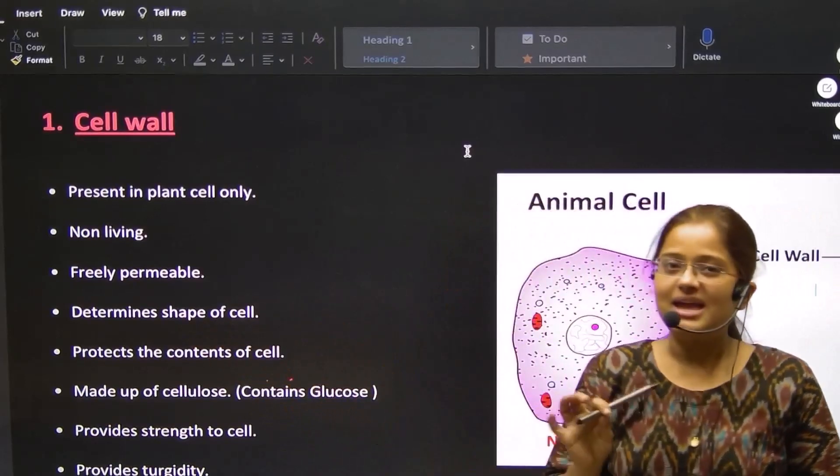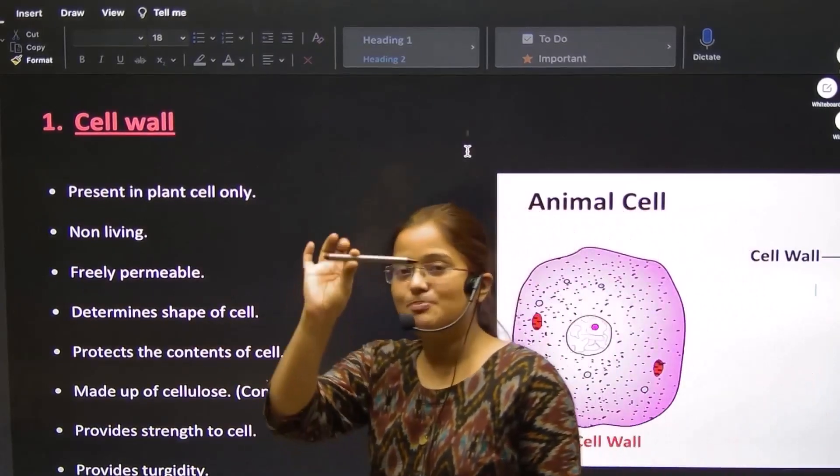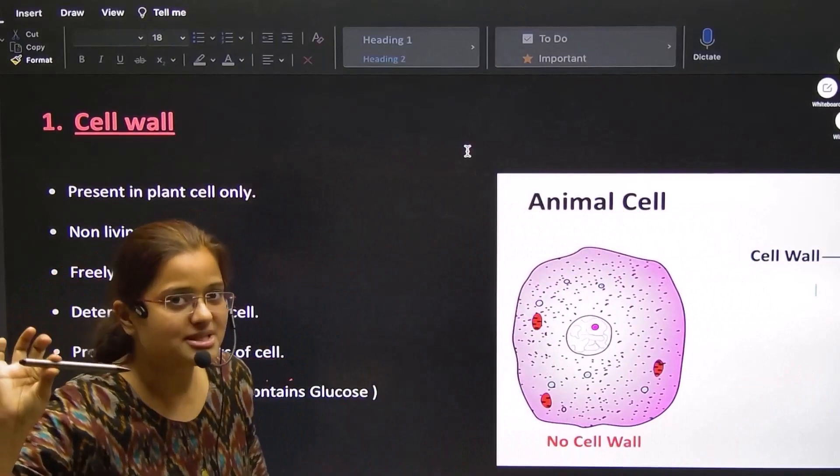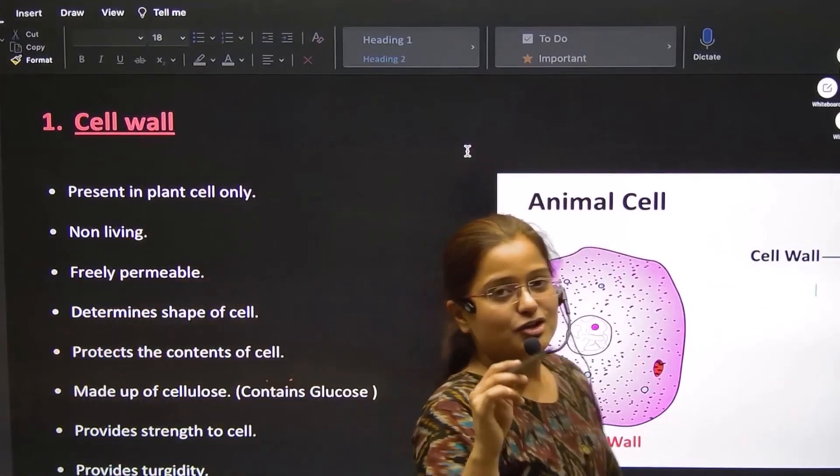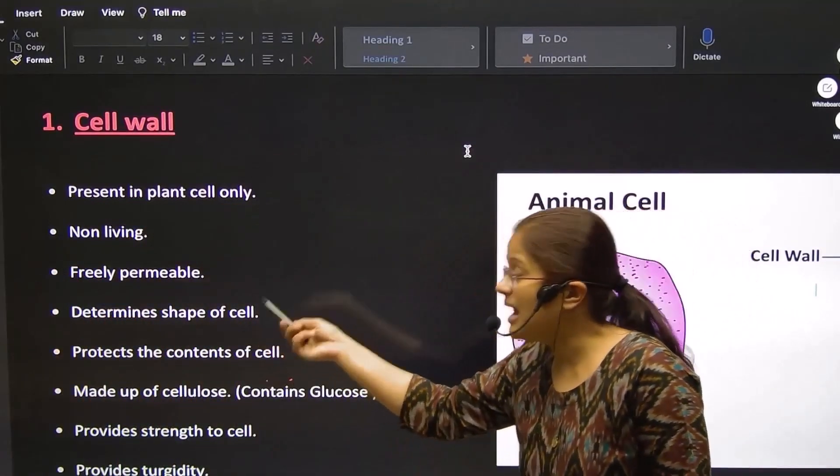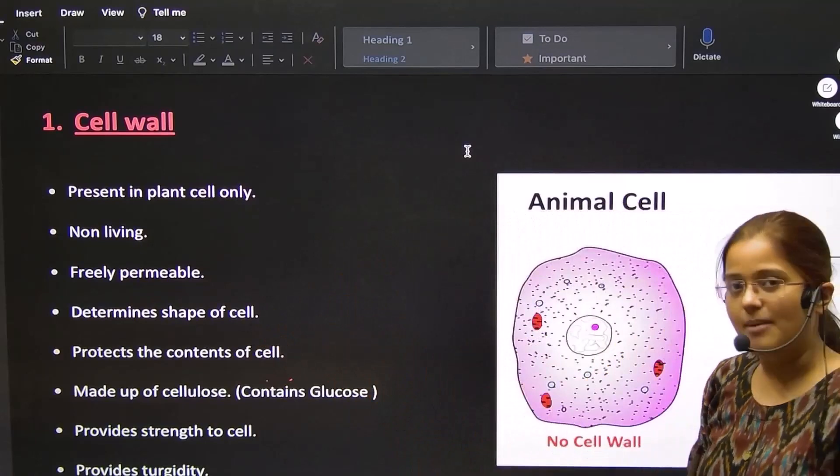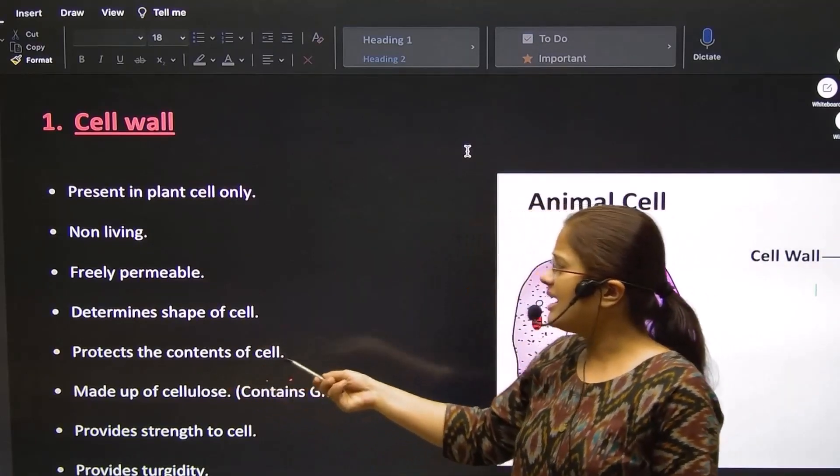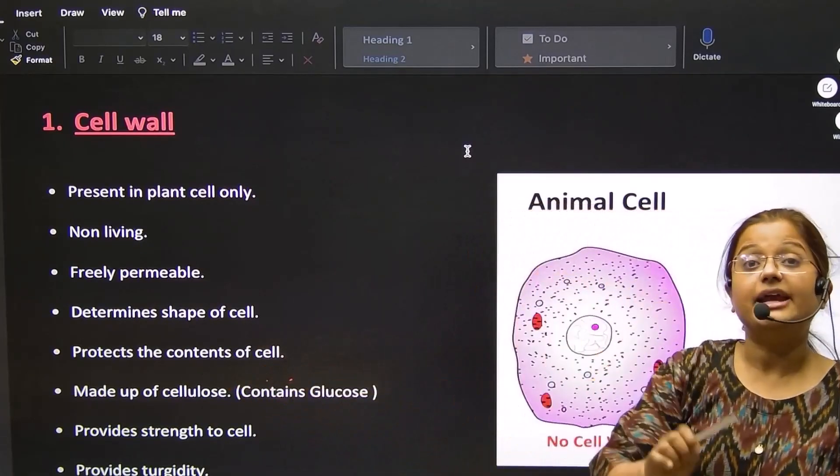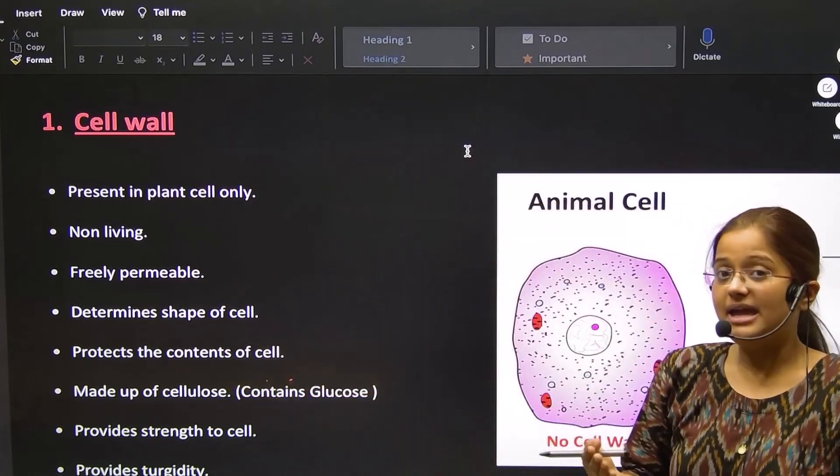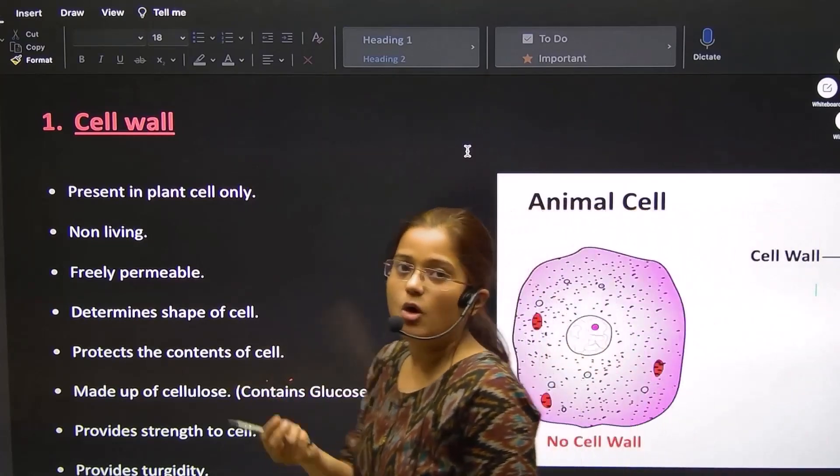Determines the shape of the cell. Like putting on the pen of the table, all of this is the cell wall in the plant. And what does the cell wall do? The cell wall protects the contents of the cell.